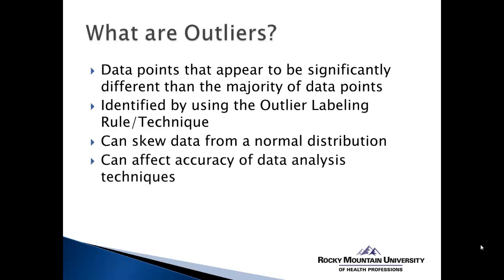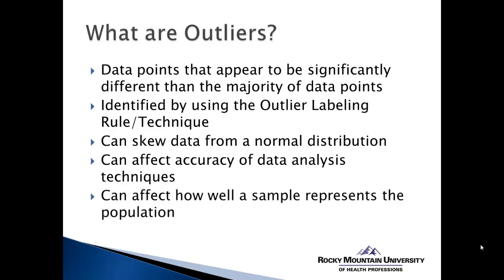Because of this assumption of normal distribution for parametric statistics, if we try to do parametric analysis using skewed or non-normal data, that would significantly affect the accuracy of that technique. We would be testing our hypothesis using a p-value that probably will not reflect any true differences. This can also affect how well a sample represents the population. If our sample has outliers that are not typically present in the population, then our sample no longer represents the population, and any inferences made during hypothesis testing will be false, limiting the external validity and generalizability of results.